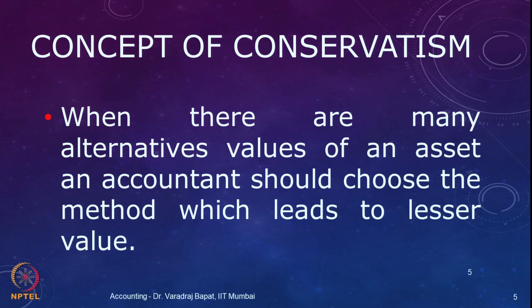When alternative values of assets are available, accountants need to choose the one which leads to the lesser value. For example, a particular asset can have 2 values: as per one method the value is 50,000, and as per the other method it is 45,000. As per the concept of conservatism, we will value the asset at 45,000, because instead of showing excessive value, it is better to be conservative — we do not want the value in the balance sheet to be inflated.